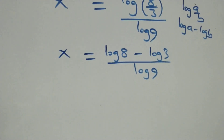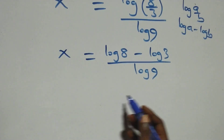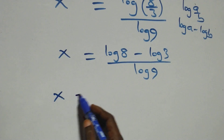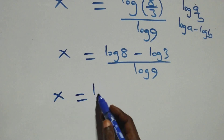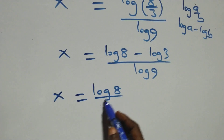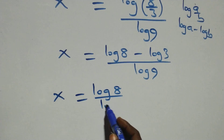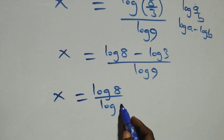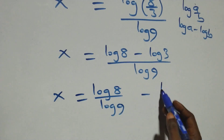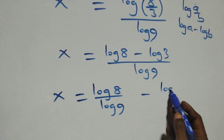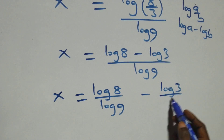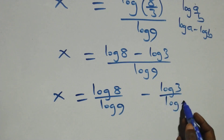So what we have becomes x equals log eight minus log three, all over log nine. We separate this into two fractions: x equals log eight over log nine minus log three over log nine.